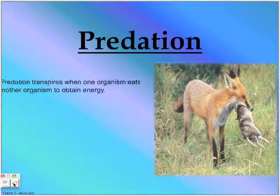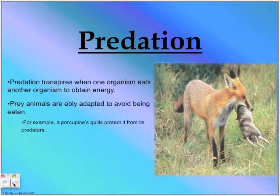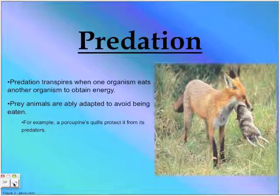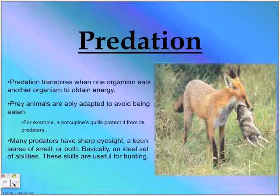Predation transpires when one organism eats another organism to obtain energy. Prey animals are highly adapted to avoid being eaten. For example, a porcupine's quills protect it from its predator. Many predators have sharp eyesight, a keen sense of smell, or both.